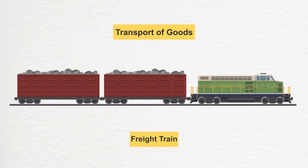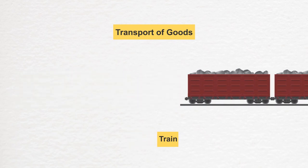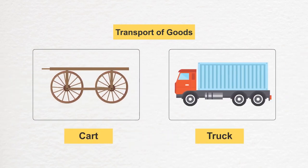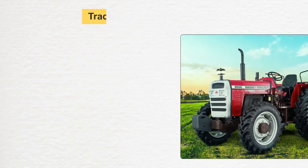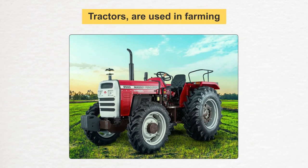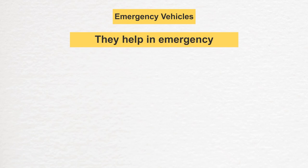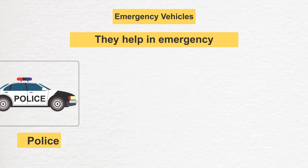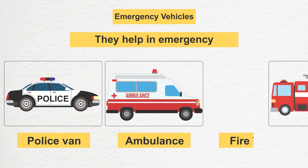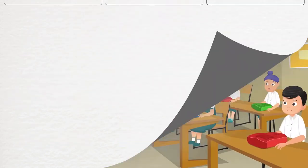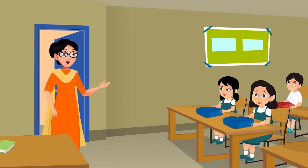A student answered: no ma'am, vehicles are also used to transport goods. An example is the malgaadi or freight train. The teacher confirmed: absolutely right! Other examples include carts, trucks, etc. Some vehicles like tractors are used in farming. Some are called emergency vehicles — they come to the aid of the public during emergencies. Examples are police vans, ambulances, and fire trucks.